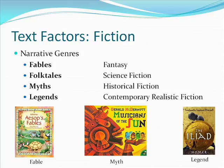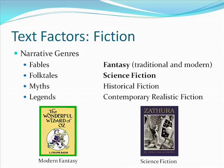Traditional fantasy is literature that originated orally and has no known author. The stories we now associate with the Brothers Grimm are traditional fantasy, since the Brothers Grimm only collected the oral stories and are not the original author. Modern fantasy is distinguished from other genres by story elements that violate the natural physical laws of our known world — events akin to magic.